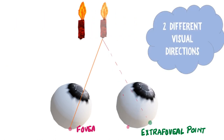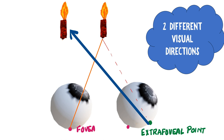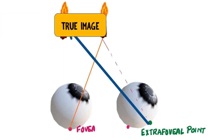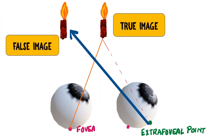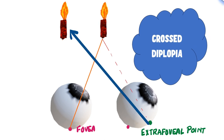On the other hand, if the eyeball is deviated outwards — an exodeviation — the object falls on the temporal aspect of the retina. The extra-foveal point is on the temporal aspect, so the image is formed on the nasal side. In this case, the true image and the false image have crossed each other, being present on the opposite side of the eyeball location. This is called crossed diplopia, seen in cases of exodeviation.